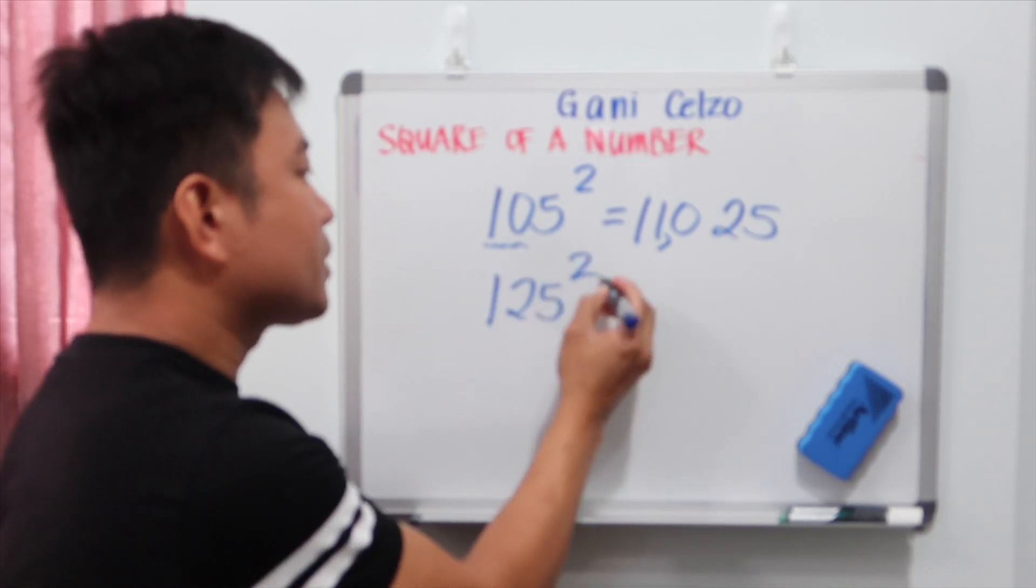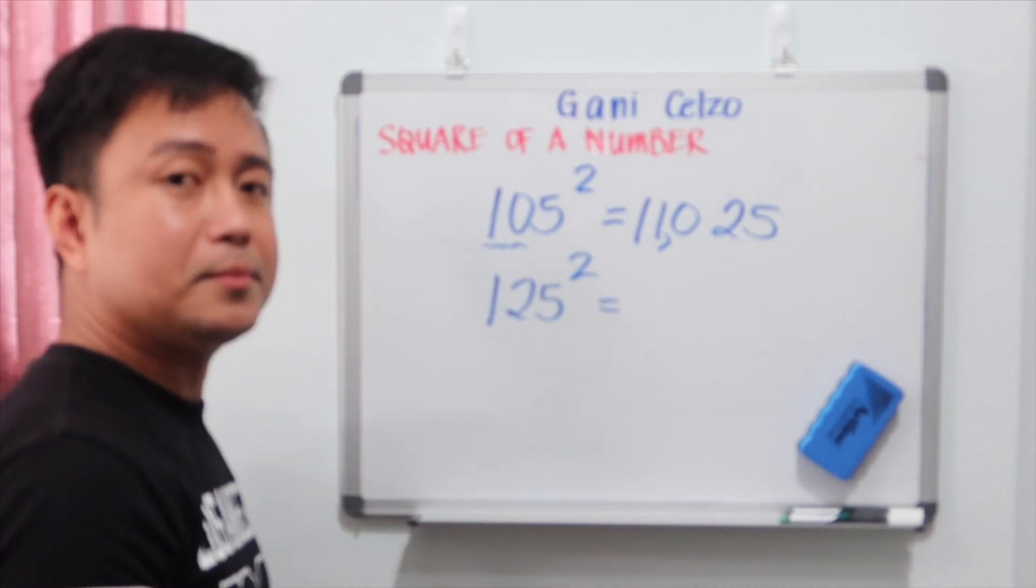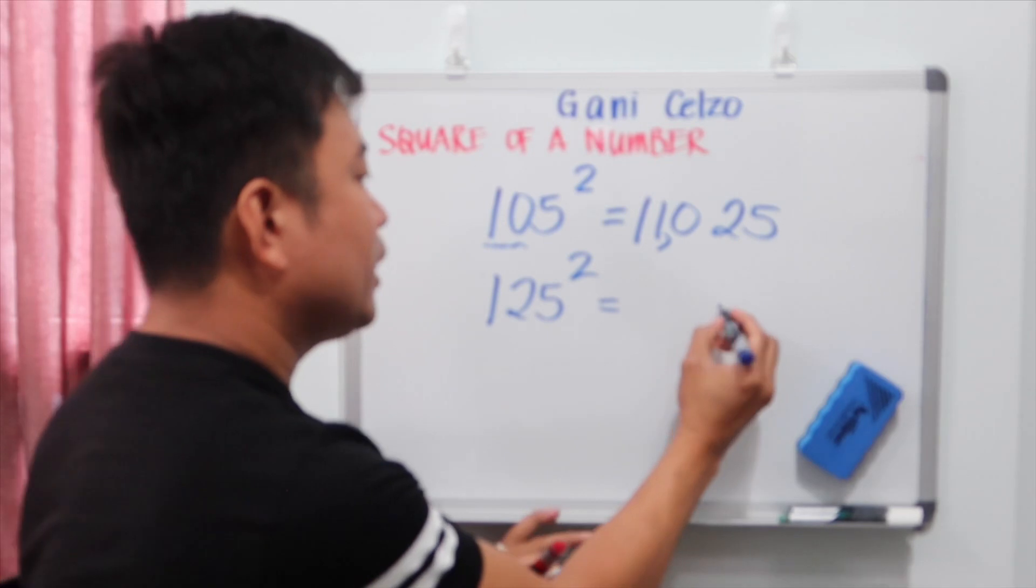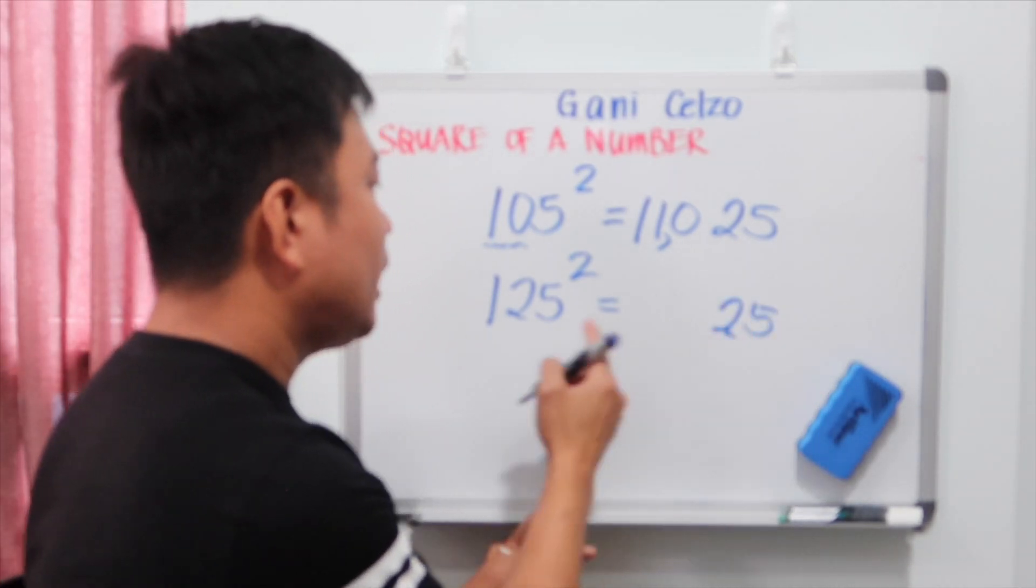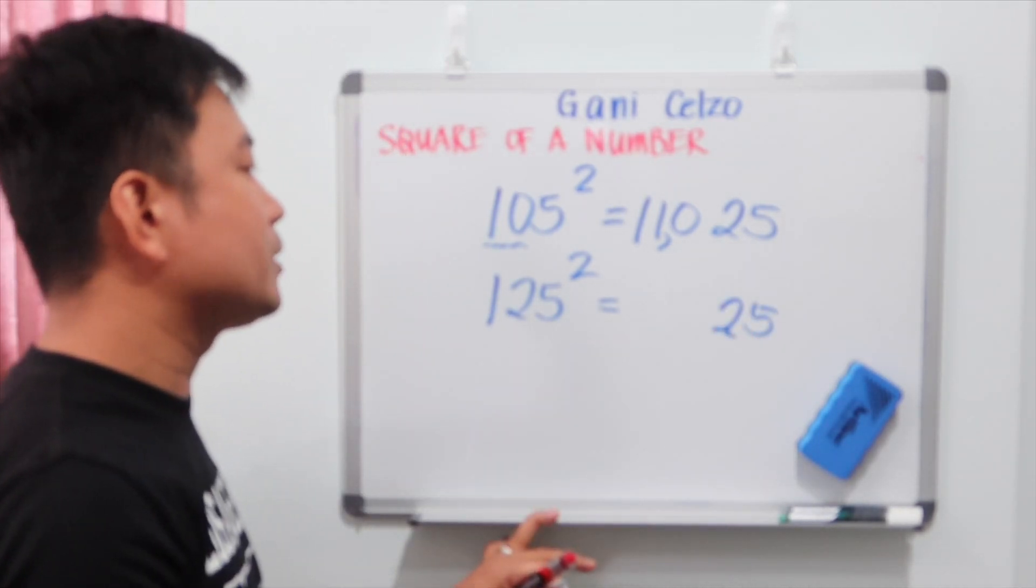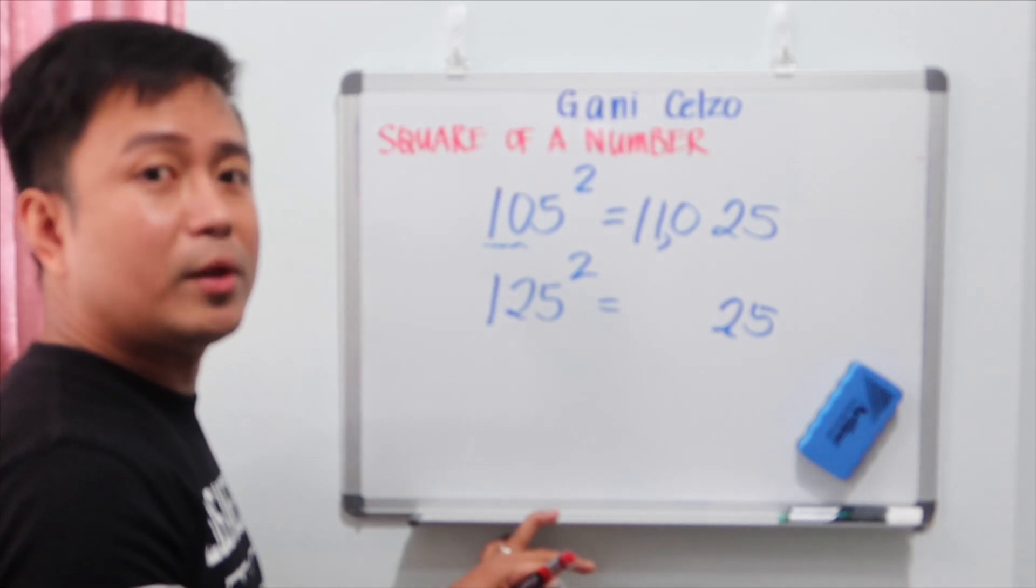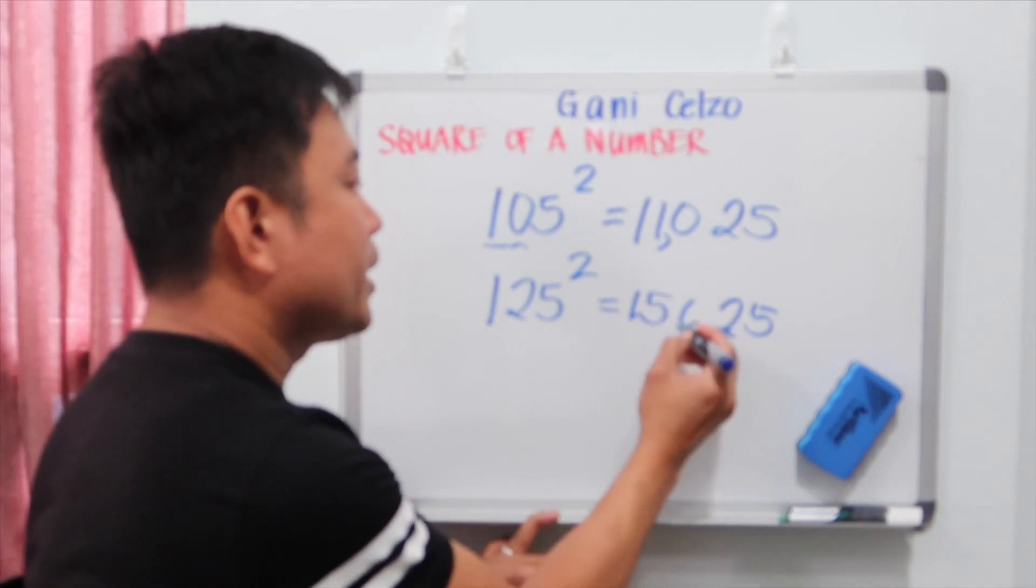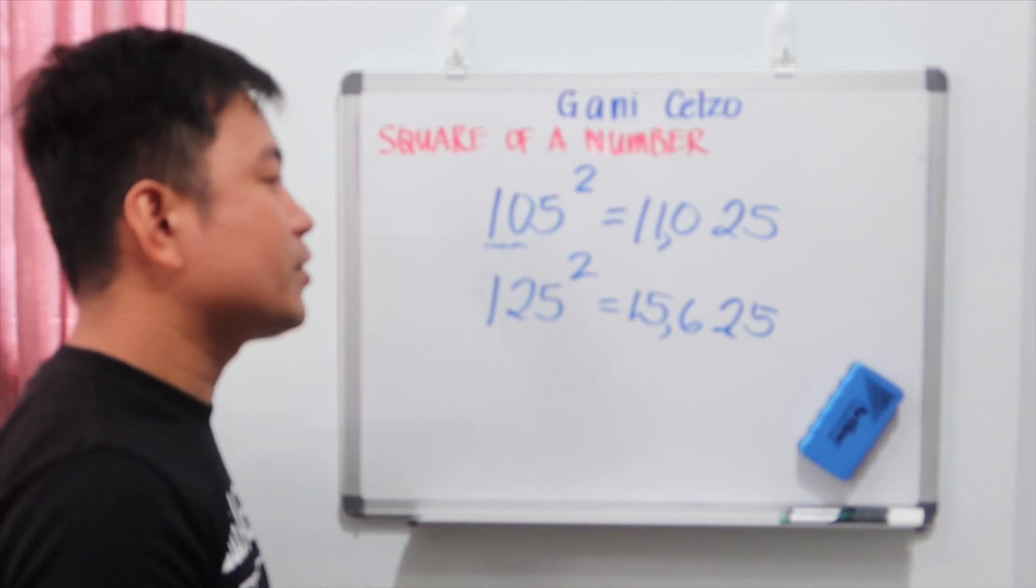125 square. The answer will be 25, the last two numbers. And we need to multiply 12 times 13. And 12 times 13 is 156. So that is 15,625.